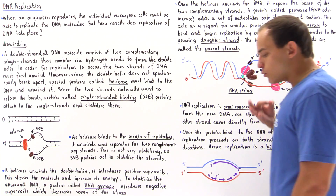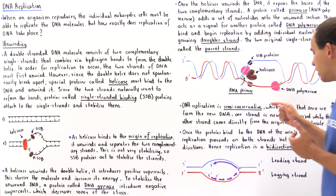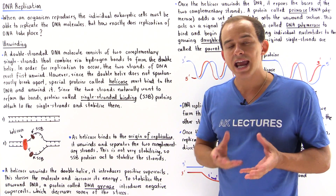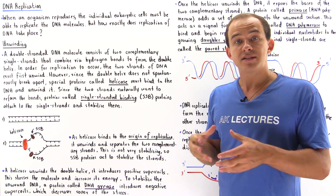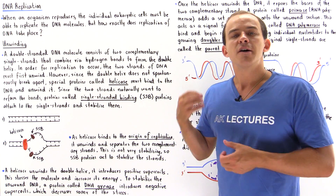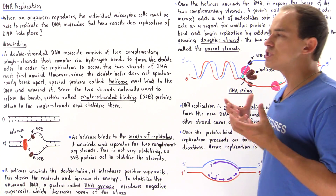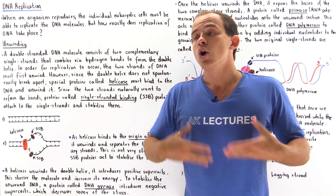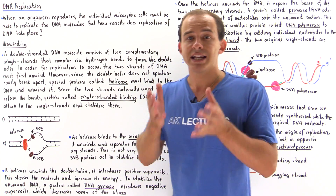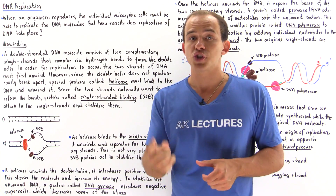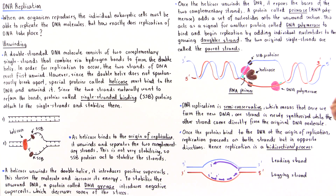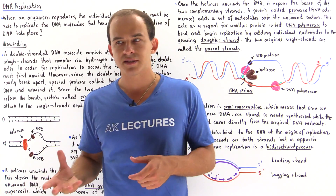Two important things we have to remember about DNA replication are the following concepts. First, DNA replication is a semi-conservative process, which means that once we form our new DNA, one of the single-stranded DNA molecules is the newly synthesized one and the other comes from our original DNA molecule used as a template. For example, if we have a single DNA molecule that undergoes DNA replication, we form two DNA molecules, and each contains one new synthesized strand and one original parent strand. This is what we mean by a semi-conservative process.